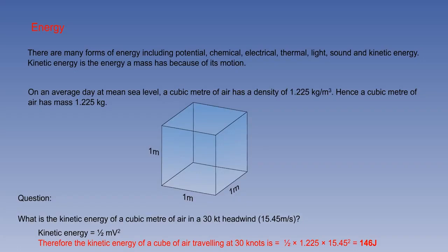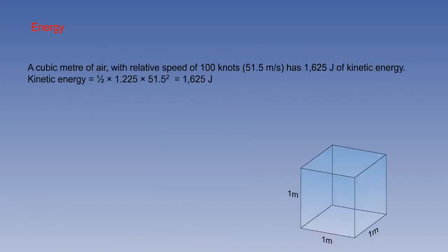Therefore, a cube of air travelling at 30 knots, which is 15.45 metres per second, has 146 joules of energy. Now let's consider the relative motion between still air and a flying aeroplane. Relative to an aeroplane flying at 100 knots, which is 51.5 metres per second, a cubic metre of air has 1625 joules of kinetic energy.